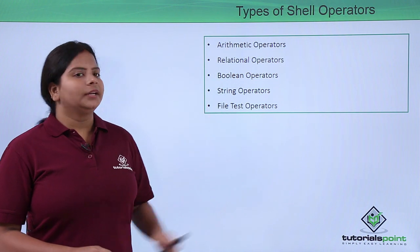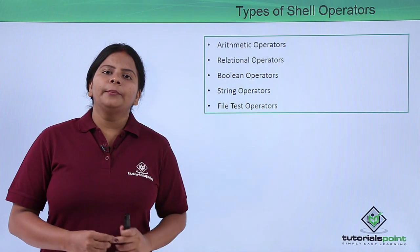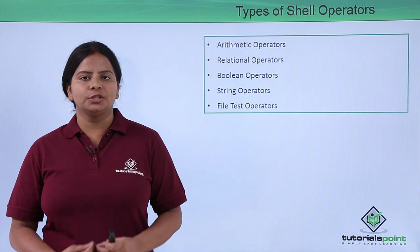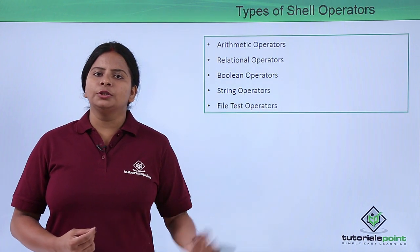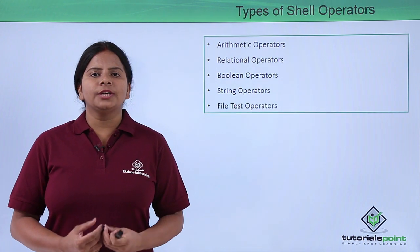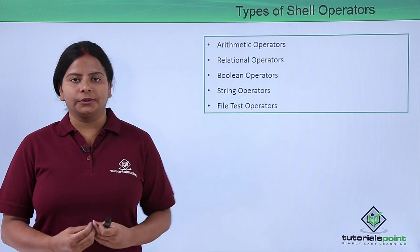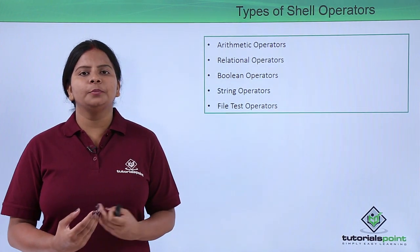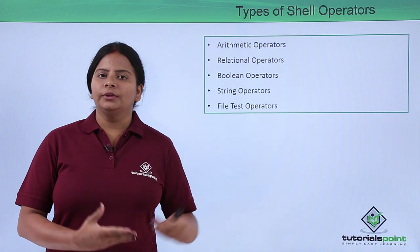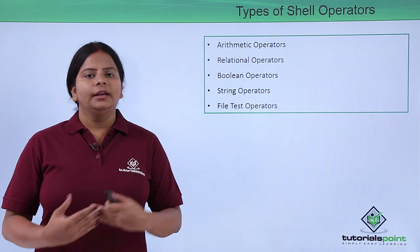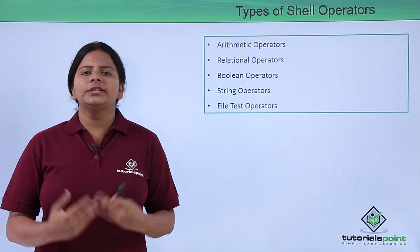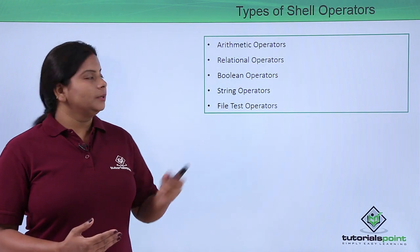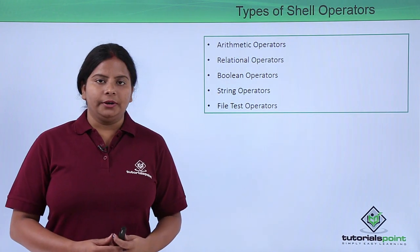Next we have relational operators. If I'm relating two different variables — for example, a's value equals 1 and b's value equals 2 — I want to check whether they are equal or not. That is nothing but the relation. I'm checking out the relation between both variables. If they are equal, they are equal; if they are not equal, they do not have a relation.